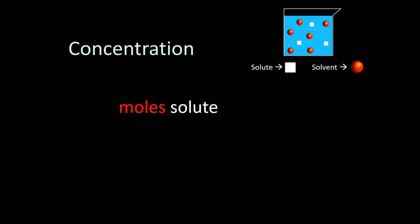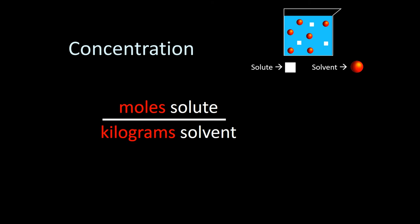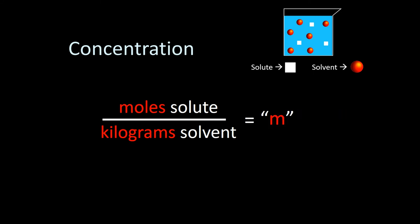For the numerator we use moles of solute to indicate the relative number of particles. For the denominator we need a value that doesn't change as temperature changes, so we use mass — specifically kilograms of solvent, because kilograms give us numbers that are easier to work with. This ratio is known as molality, not to be confused with molarity. We symbolize it with a lowercase m, and it stands for moles per kilogram.